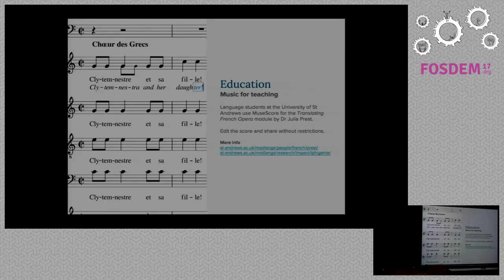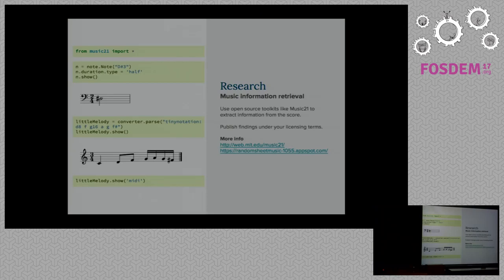One of the more interesting uses happening at the moment is some students at the University of St. Andrews are using MuseScore to produce translations of French operas into English. When you have the digital file in MuseScore, it allows you to write the lyric translation straight underneath the original language, and then the students can share their translations with each other without worrying about copyright issues from photocopying music. You can also use these files as a research tool — if you pair it with the open source Music21 toolkit, you can extract information from the score, such as how many notes of each kind there are or what key signatures the composer used, and researchers can publish their results under any license of their choosing.